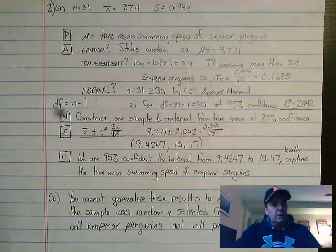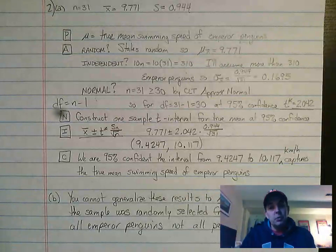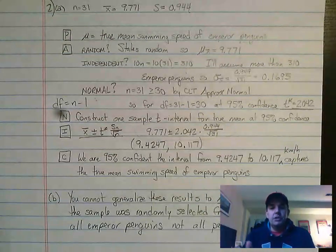Okay, we moved on to question two on progress check number seven. It's another means question and another confidence interval question.